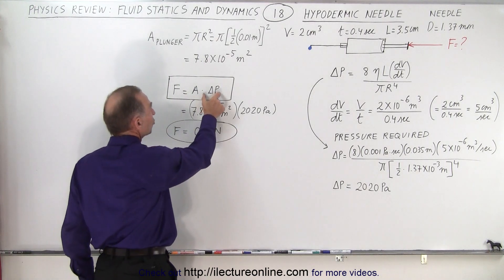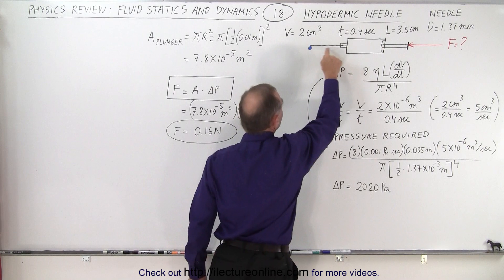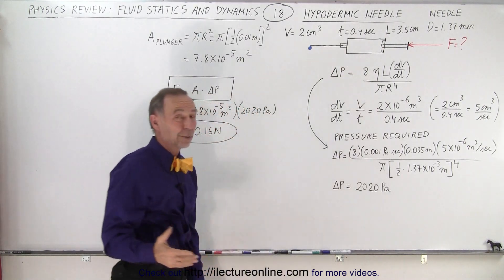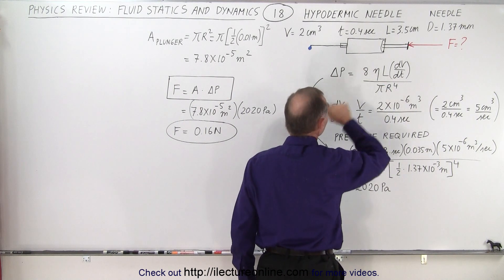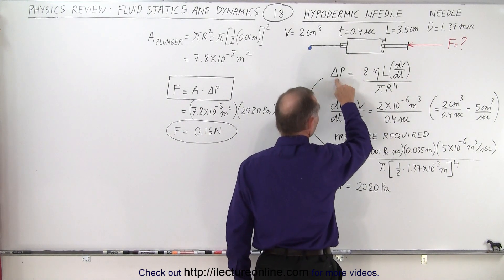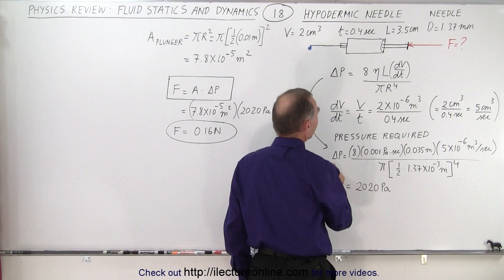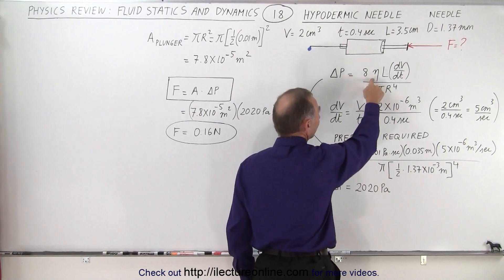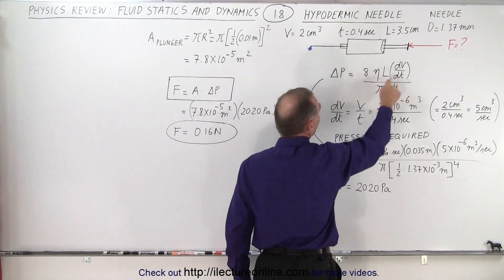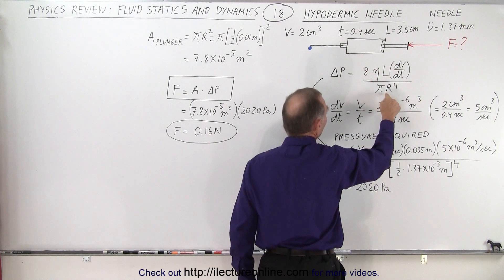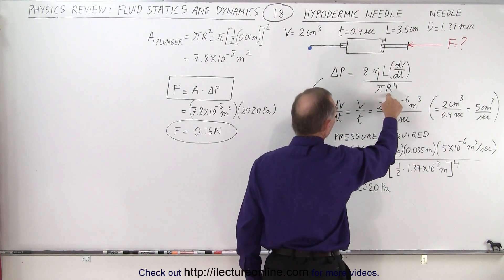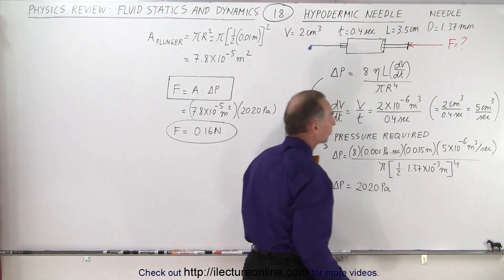Now we need to find the change in pressure between the back of the needle and the front of the needle. And for that we use the equation that we use for viscosity of the fluid but we solve that equation for the delta pressure and then notice the delta pressure will simply be equal to 8 times the viscosity, the length of the needle, times the rate of change of the fluid flow through the needle divided by pi r to the fourth. And r of course would be the radius of the needle.